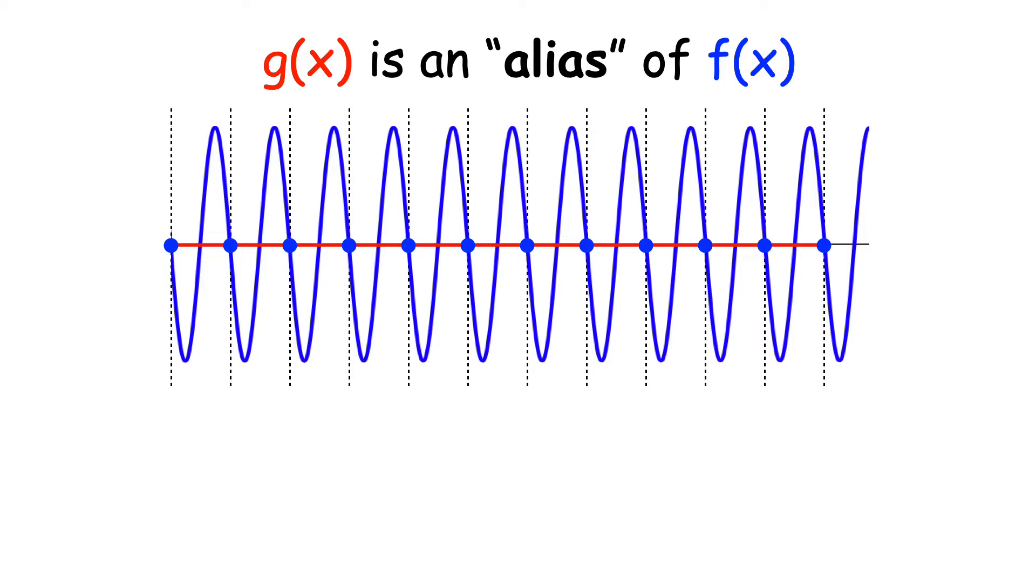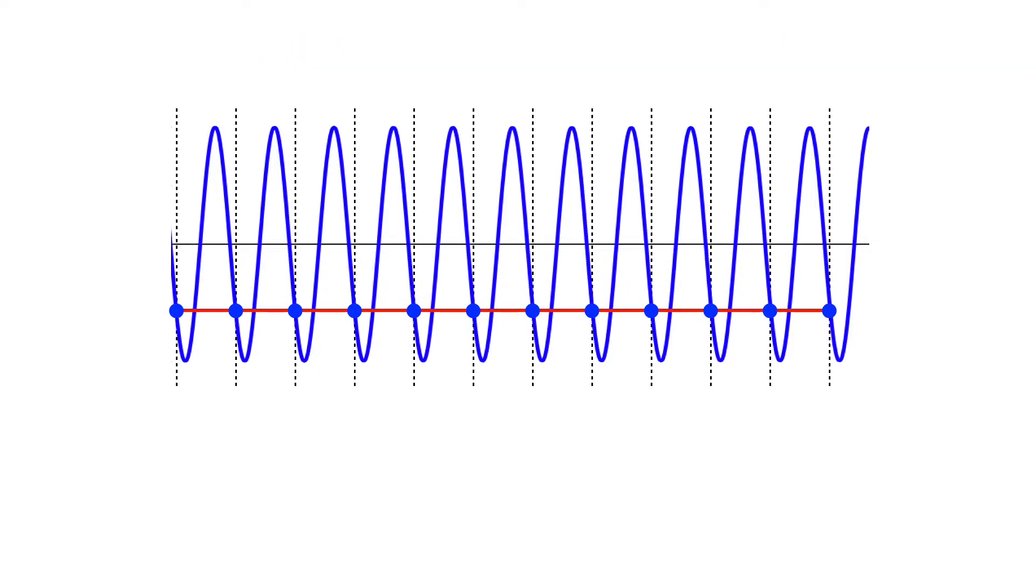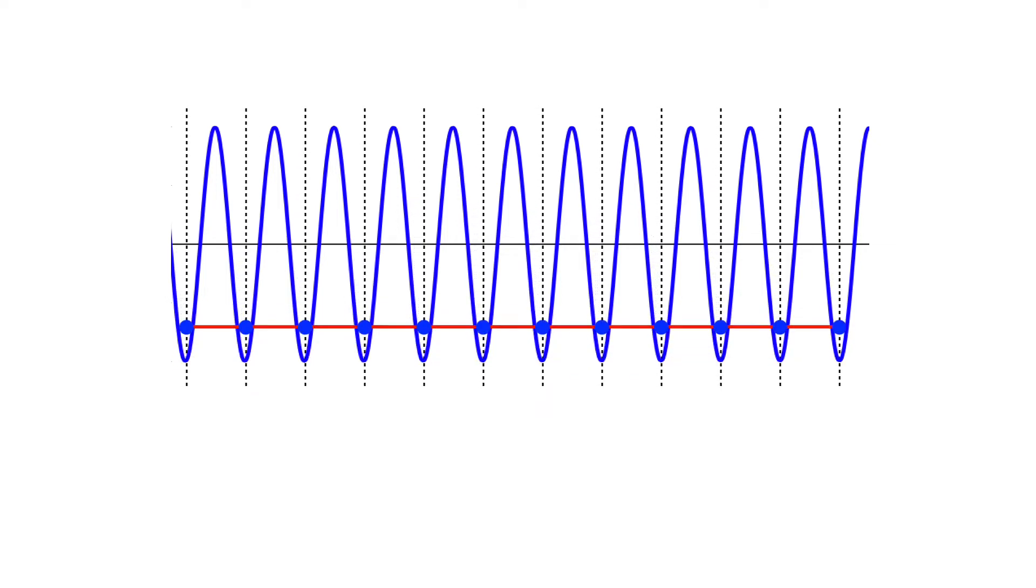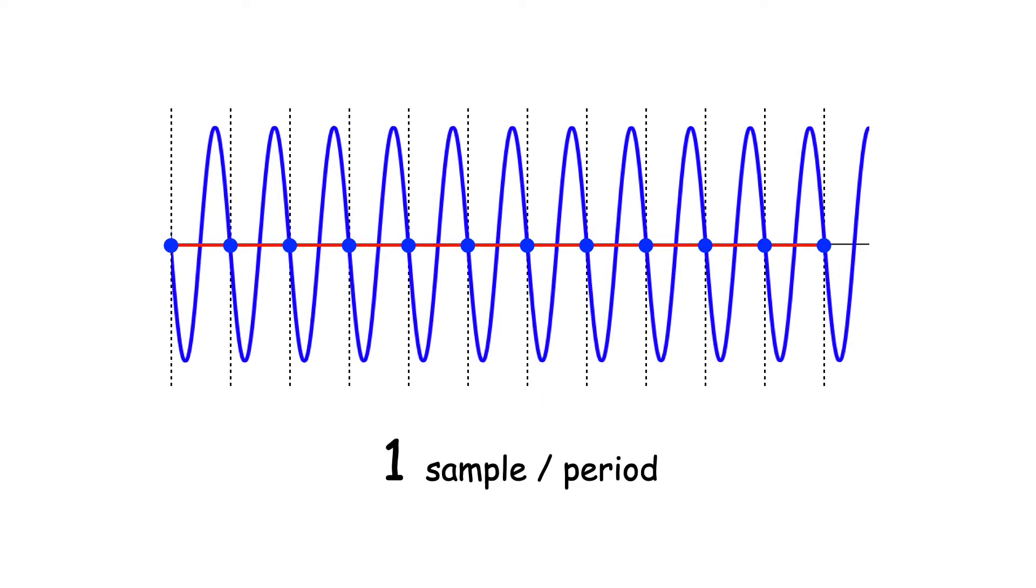OK, let's try moving the samples, but keep the same spacing. Wow, you still get a line. You'll always get a line if you sample exactly once per period with equal spacing.